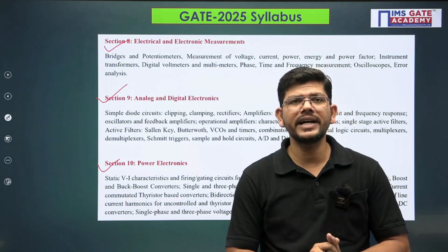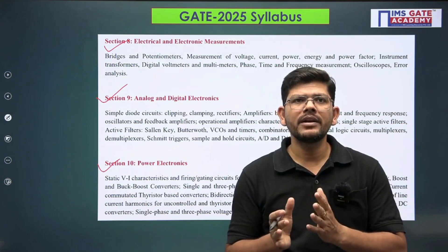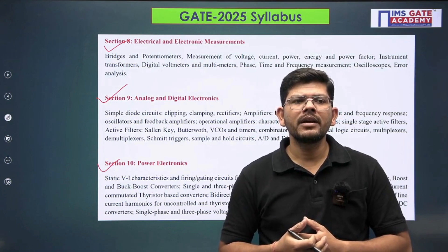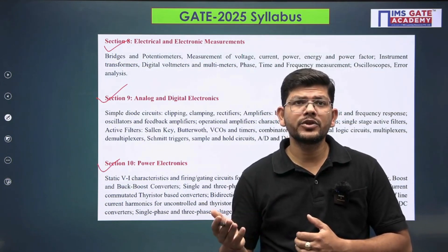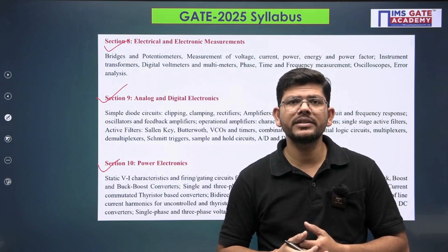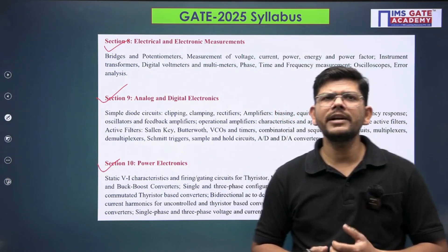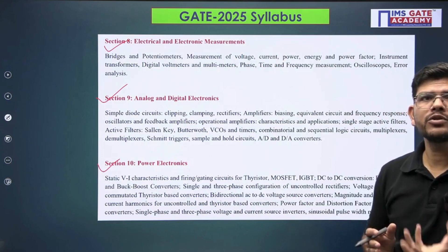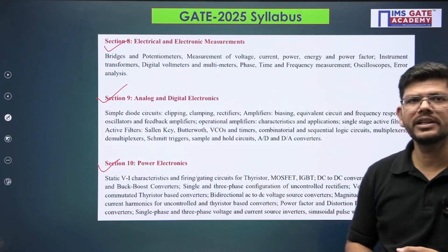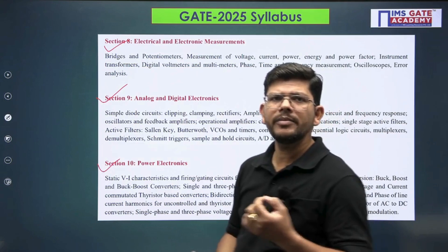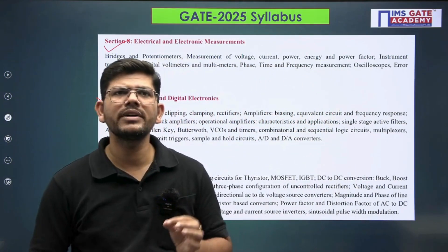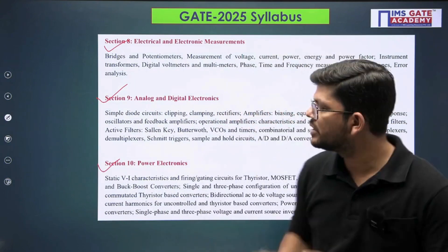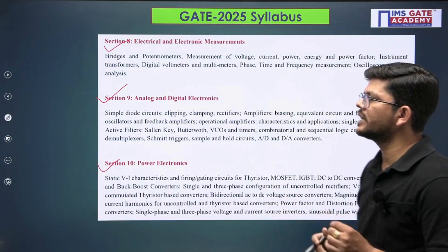Under Power Electronics, you will cover the static V-I characteristics of different switches, an introduction to various power devices, and specifically choppers, rectifiers, and inverters. AC voltage controllers have also been asked in exams although not explicitly in the syllabus, so my advice is to have a quick look at that concept as well. That completes all ten sections.